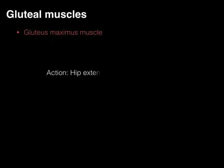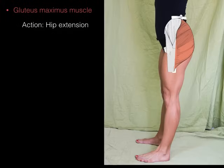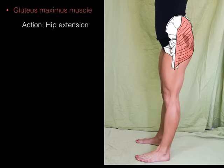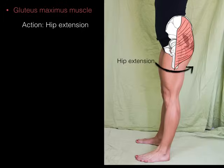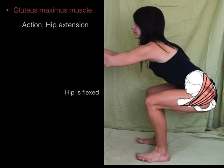The action of the gluteus maximus is hip extension, but when the hip is in a flexed position. There we've got the gluteus maximus from the lateral side. When the hip is flexed, this is where the primary biomechanical advantage is given to the gluteus maximus. When this muscle contracts, it extends the hip when the hip is already in a flexed position.